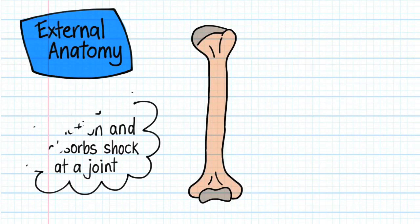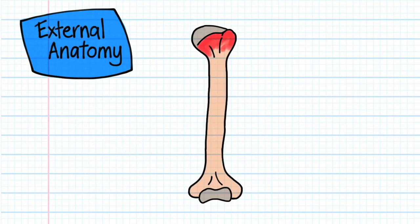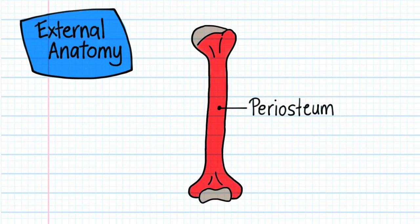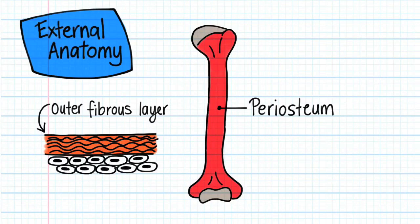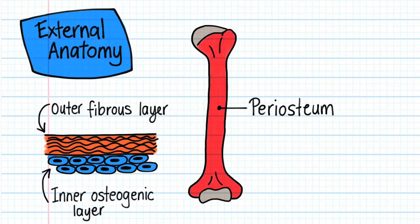The rest of the external surface of a long bone is covered with periosteum, a tough connective tissue sheath. The periosteum is divided into two layers: an outer fibrous layer of dense irregular connective tissue that protects bone and an inner osteogenic layer that contains bone forming cells.